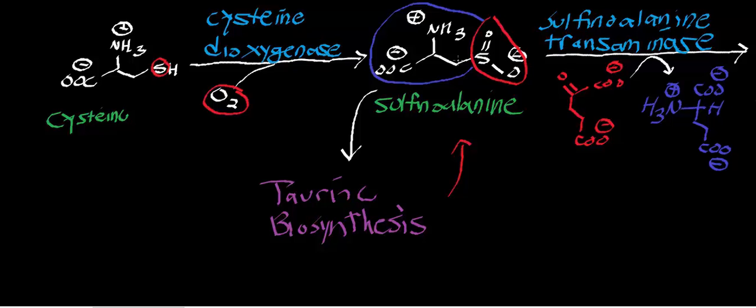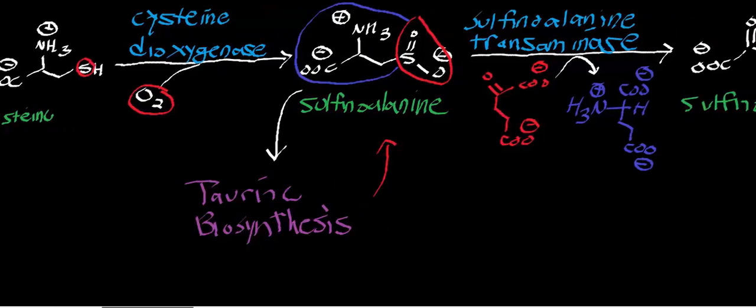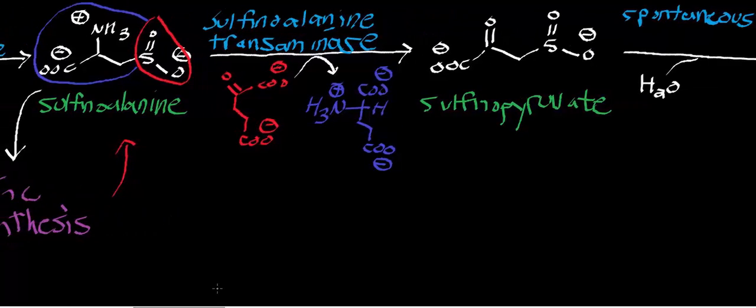But anyways, we get sulfenoalanine through this enzyme. Now, we're going to run in the direction of cysteine catabolism, and sulfenoalanine will react with sulfenoalanine transaminase. And just like all transaminases, this is a pyridoxal phosphate-dependent reaction.